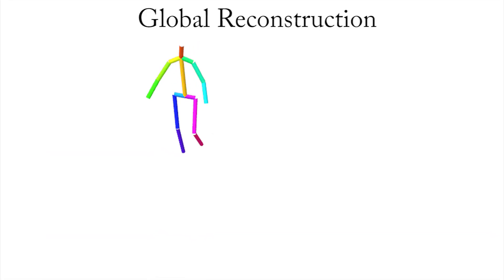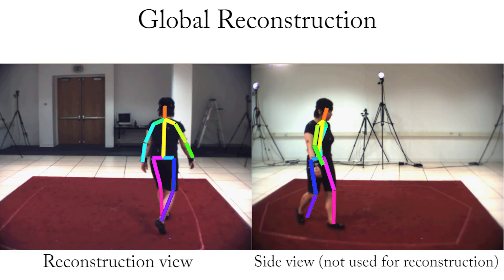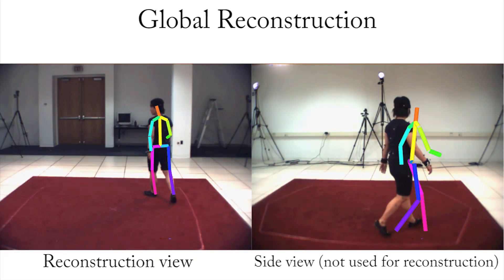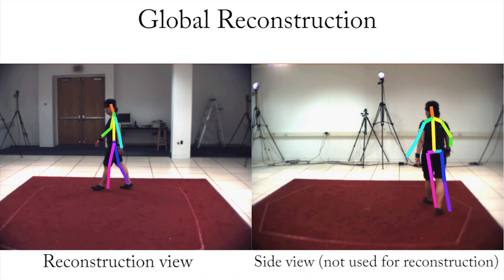Here we see the predicted 3D pose and global position of the walking sequence of the Human EVA dataset. To visually assess our results, here we re-project our results to a second camera not used for regression.